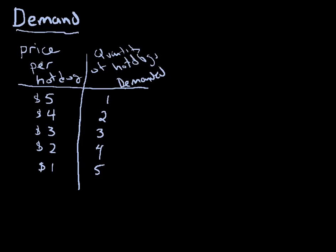Demand looks like this — it's a schedule of numbers. These are prices of hot dogs, and this is the quantity of hot dogs demanded. At $5, I demand one hot dog. At $4, I demand two hot dogs. At $3, I demand three hot dogs. At $2, I demand four hot dogs. And at $1, I demand five hot dogs.